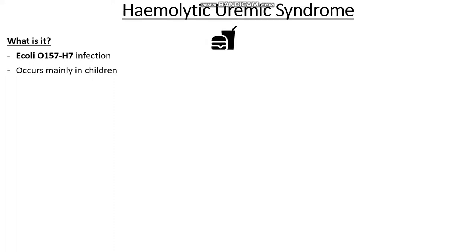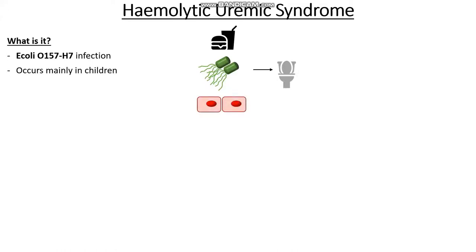It often starts with contaminated foods, and when we eat it we get infected by the E. coli bug, which often very early on causes a bloody diarrhea. Following this, the actual toxin released by the E. coli can actually damage our endothelium. And damaging of the endothelium leads to the formation of platelet clots, as well as clots of fibrin.